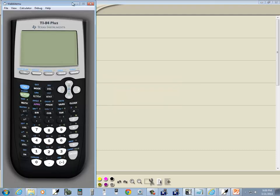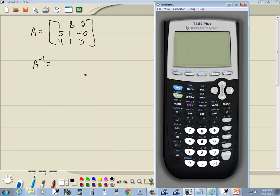Well, let's go put this into our calculator first. So I'm going to do second, x of negative 1. That's actually our inverse button, which we'll talk about in a minute. But that's how we get into our matrix menu. We'll right arrow twice over to edit, and we'll do enter on A.